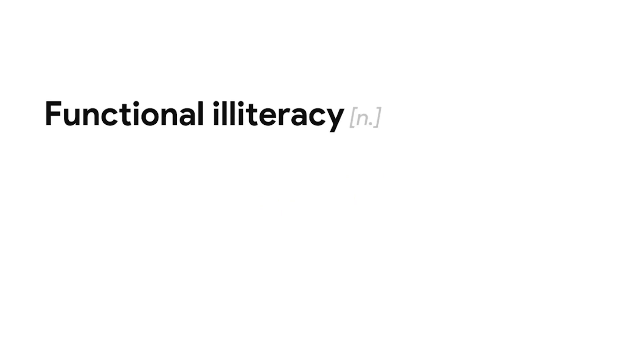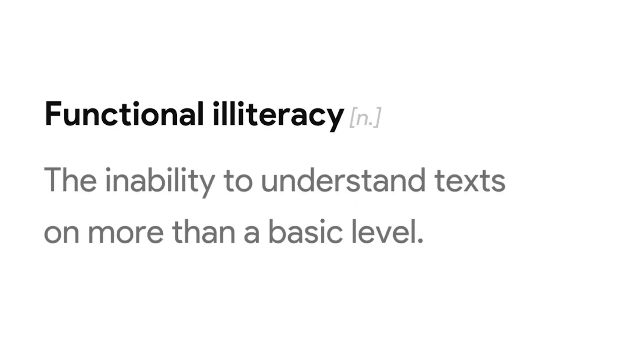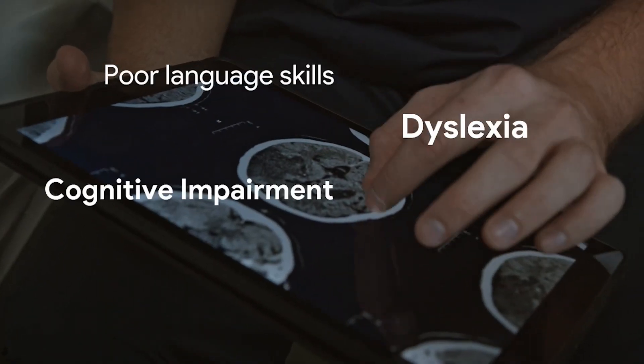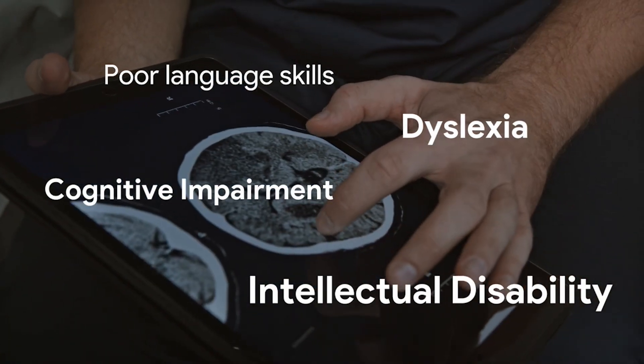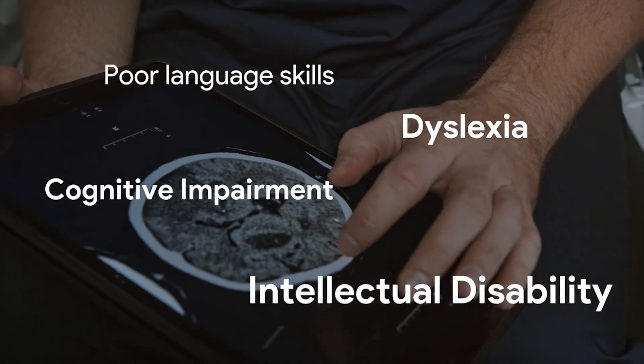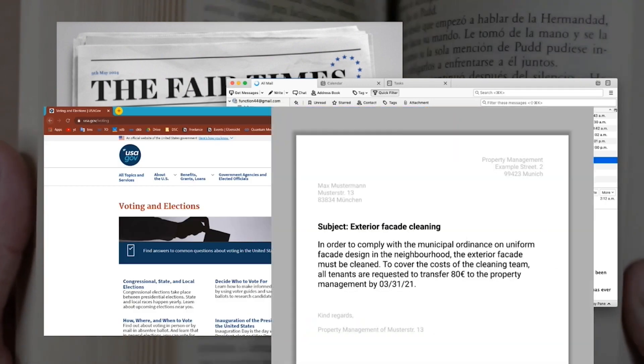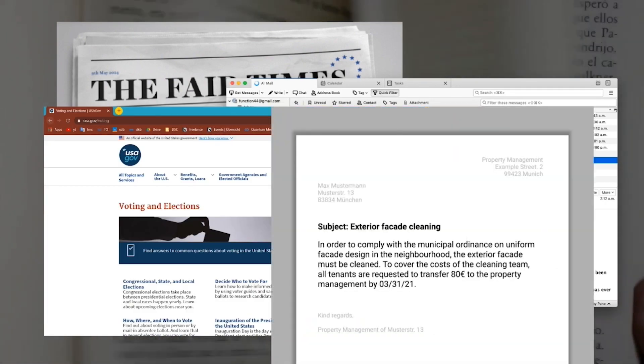The concept of functional literacy is based on UNESCO definitions which cover a continuum of proficiency levels rather than a dichotomy. Functional illiteracy — the inability to understand texts on more than a basic level — is the reality for one in seven people worldwide. Among others, one common cause is intellectual disabilities. In a world where we communicate mainly through text, people with functional illiteracy are excluded in many ways.